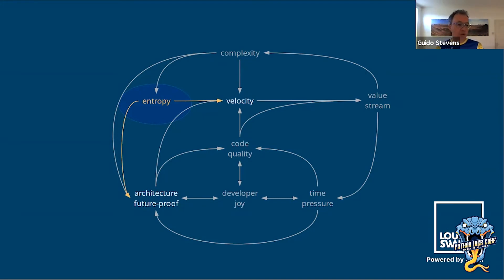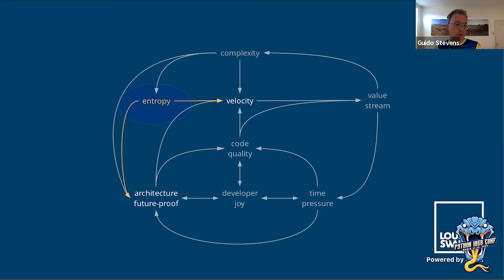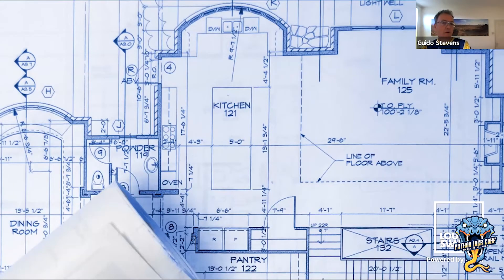This is the place of entropy in the systems model. Systems degrade over time. They resist change more and more. This decreases velocity. Also, the world keeps changing, so your architecture risks becoming outdated. And that brings me to a main point, which is architecture — a major flex point for fixing or preventing technical debt.